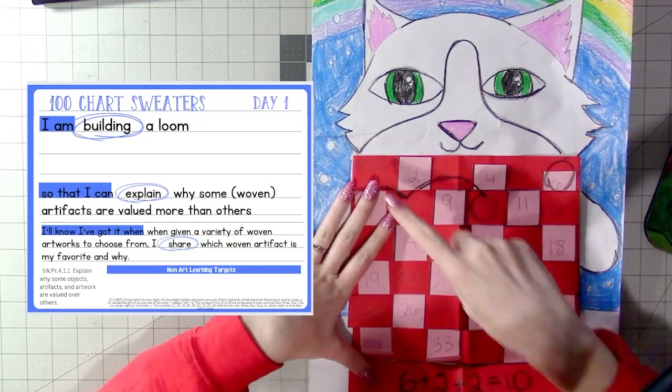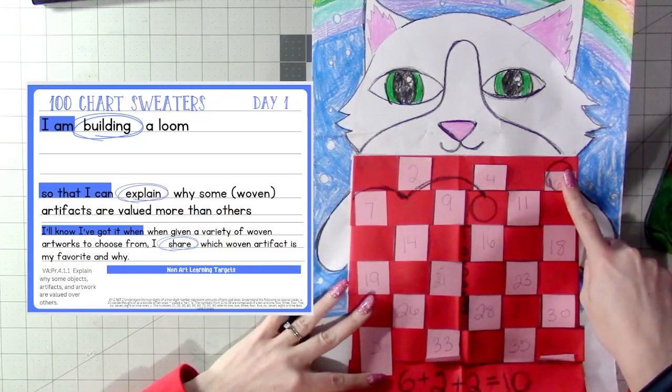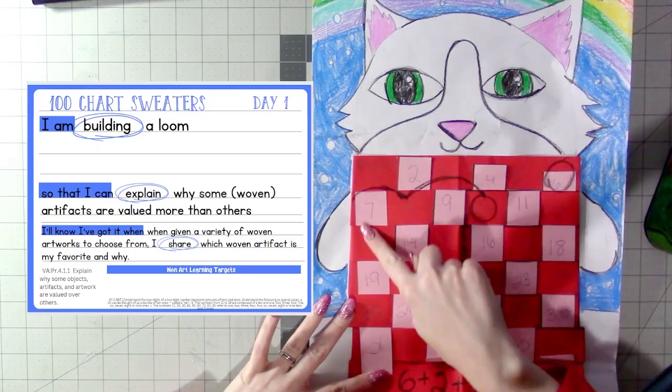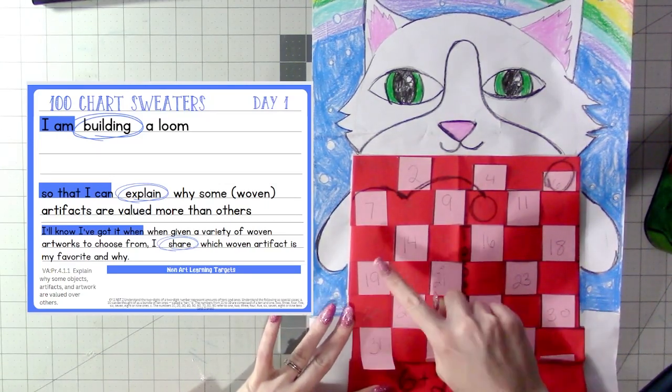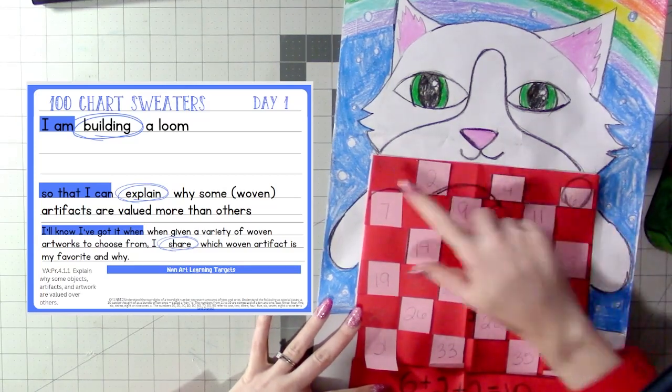This is called 100 Chart Sweaters. It will look a little something like this, but instead of six across and how many this is down? Three, four, five, six, six down. It's going to be ten across and ten down.